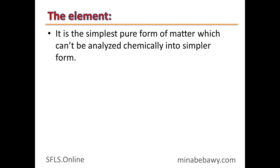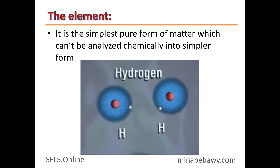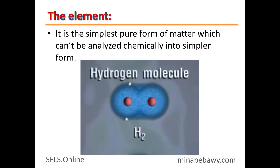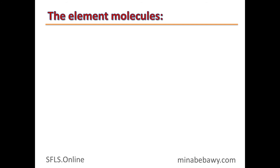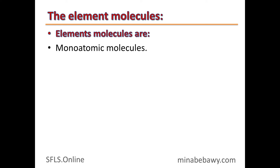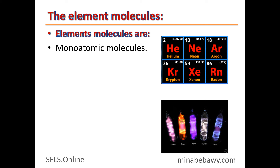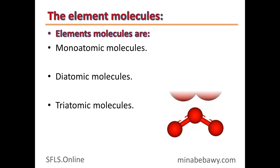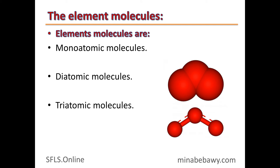What is meant by element? It is the simplest pure form of matter which can't be analyzed chemically into a simpler form. For example, the simplest form of hydrogen is the hydrogen atom. Hydrogen molecule is composed of two hydrogen atoms. Element molecules are three types: monoatomic molecules (consist of one atom), diatomic molecules (consist of two atoms), and triatomic molecules (consist of three atoms).